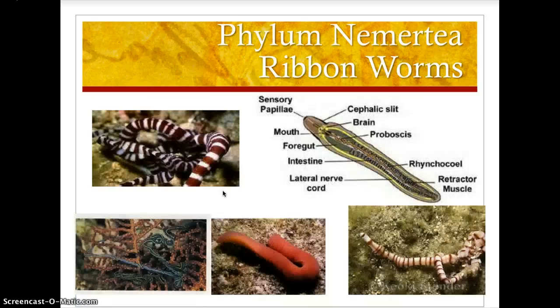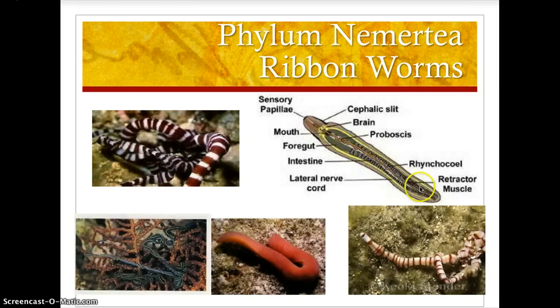Phylum Nemertea — the nemerteans are ribbon worms. Here you can see various examples of marine ribbon worms. The basic anatomy includes sensory papillae, a cephalic slit, and internal anatomy with a brain and mouth. The proboscis helps with feeding, followed by the foregut and intestine. They also have a lateral nerve cord. These are relatively simple organisms.